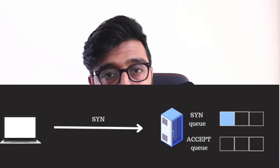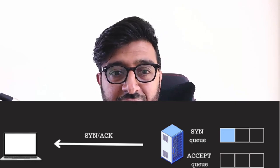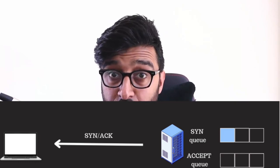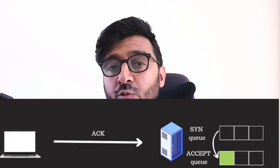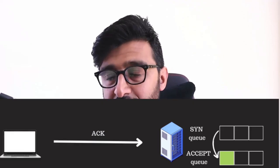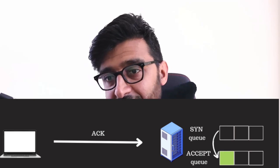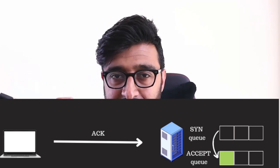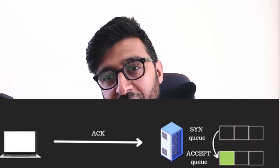The kernel immediately replies back with a SYN-ACK — acknowledging the request. The client receives that SYN-ACK and replies back with an ACK, finishing the TCP three-way handshake. When the kernel receives that ACK matching the SYN that was in the SYN queue, you then have a full-fledged connection.